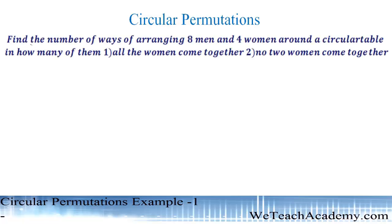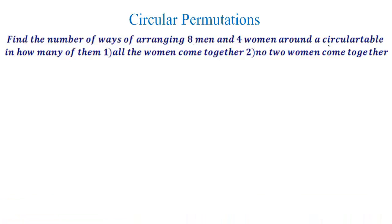Here we have to find the number of ways of arranging eight men and four women around a circular table. We are given two conditions. The first one is all the women should come together, and the second condition is no two women come together.